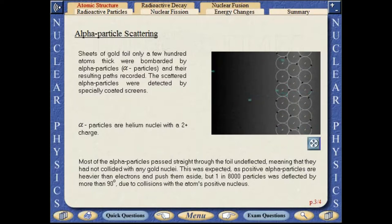Most of the alpha particles passed straight through the foil undeflected, meaning that they had not collided with any gold nuclei. This was expected as positive alpha particles are heavier than electrons and push them aside.